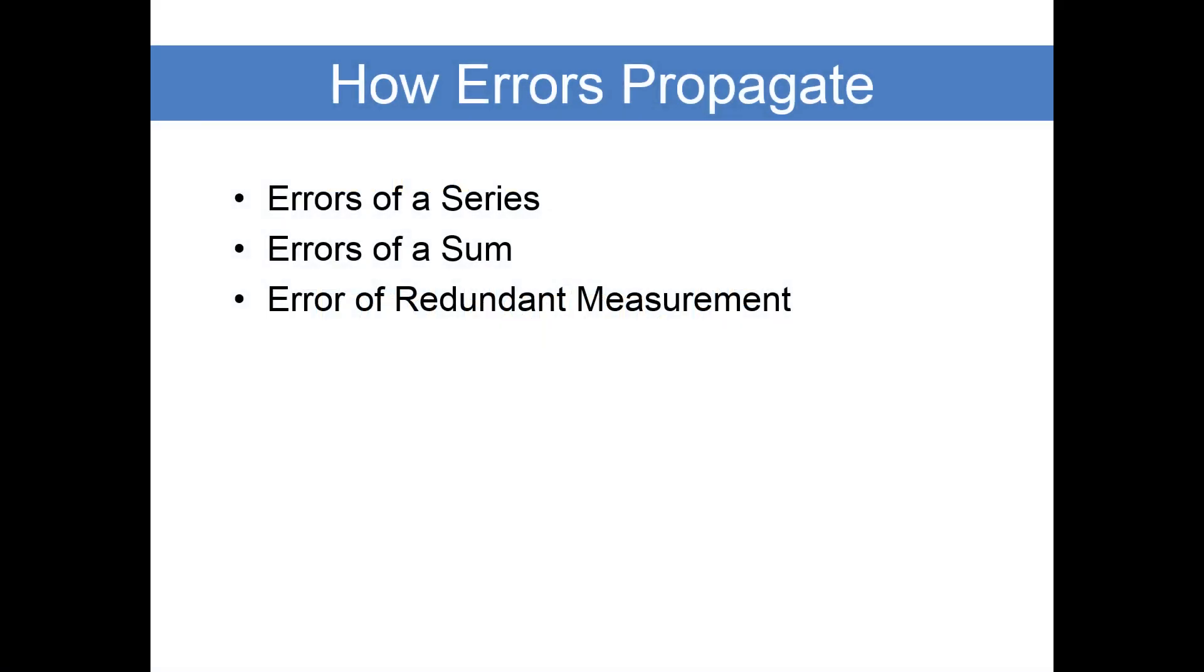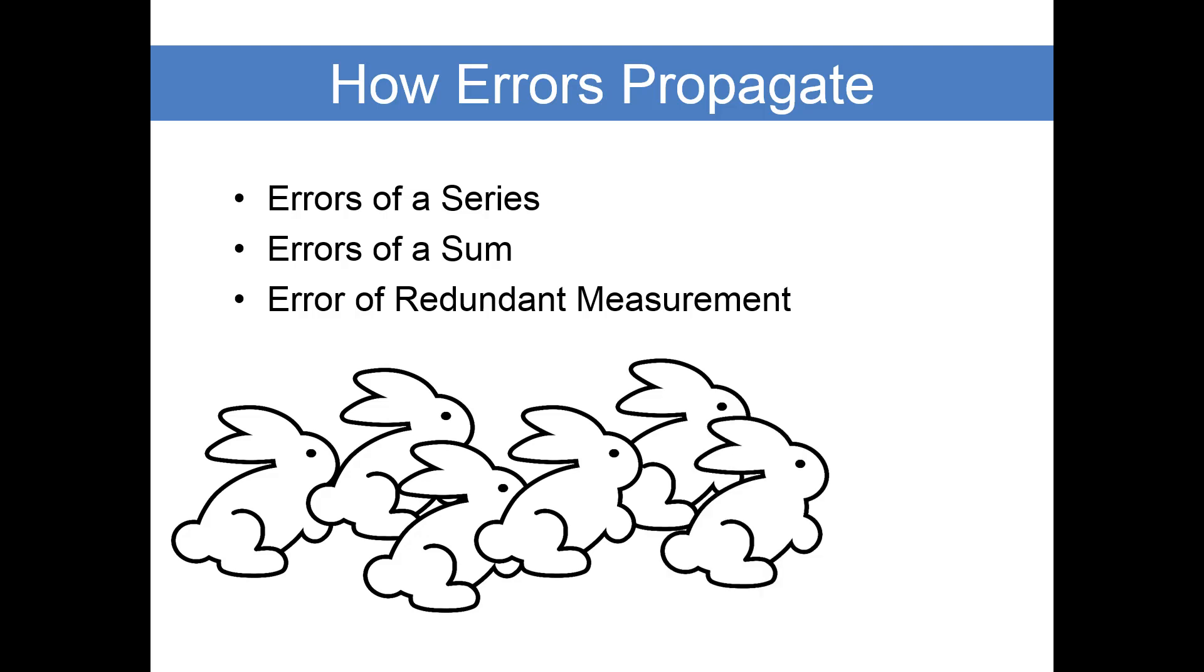Random errors propagate multiple ways. We'll talk about how that works here with the errors of a series, the errors of a sum, and the error of redundant measurement.